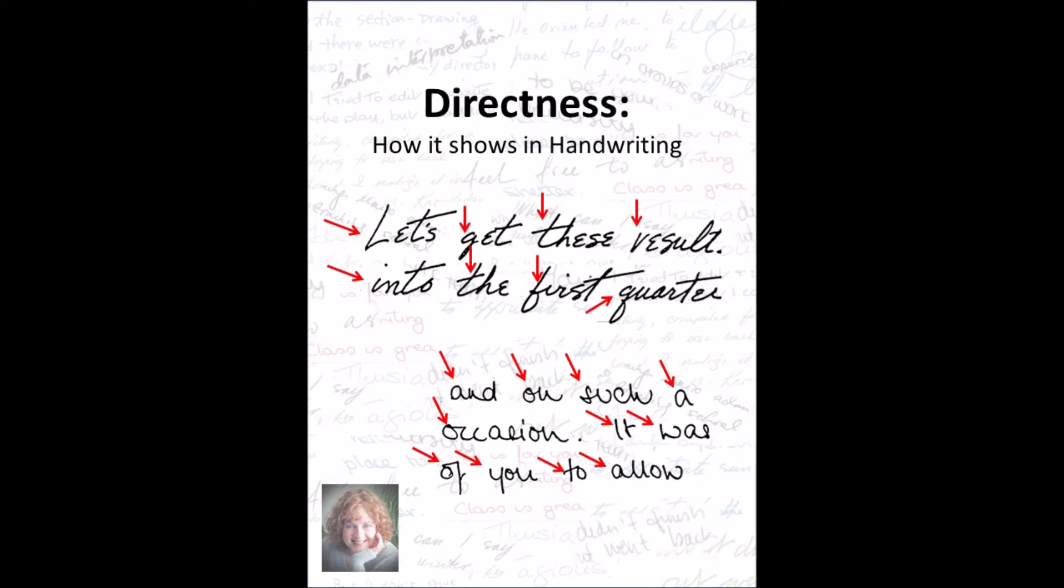Some writing has lead-in strokes. Strokes should be curved, maybe straight, but they're not a necessary part of the letter and so are called lead-in strokes. Directness only shows where these lead-in strokes are absent.